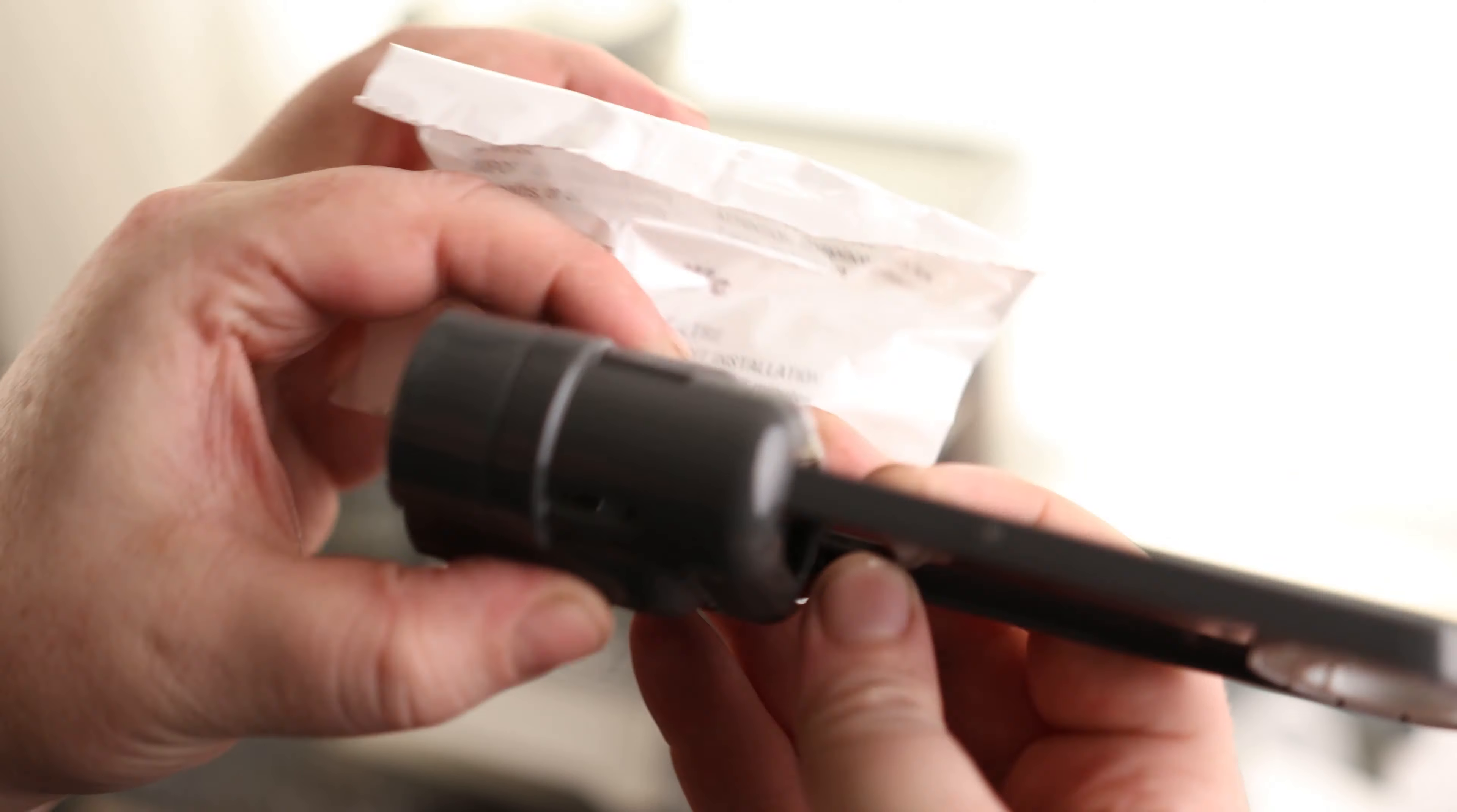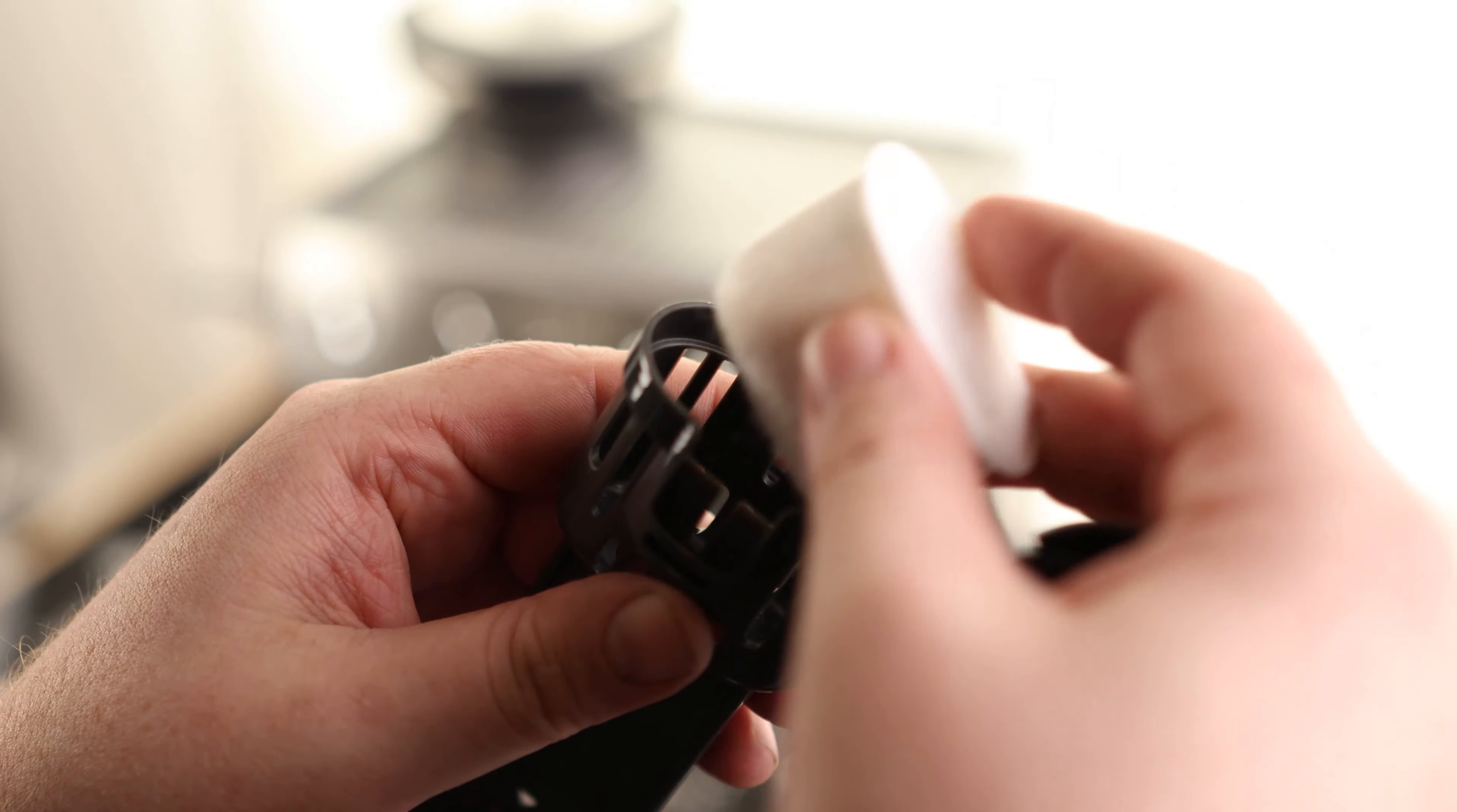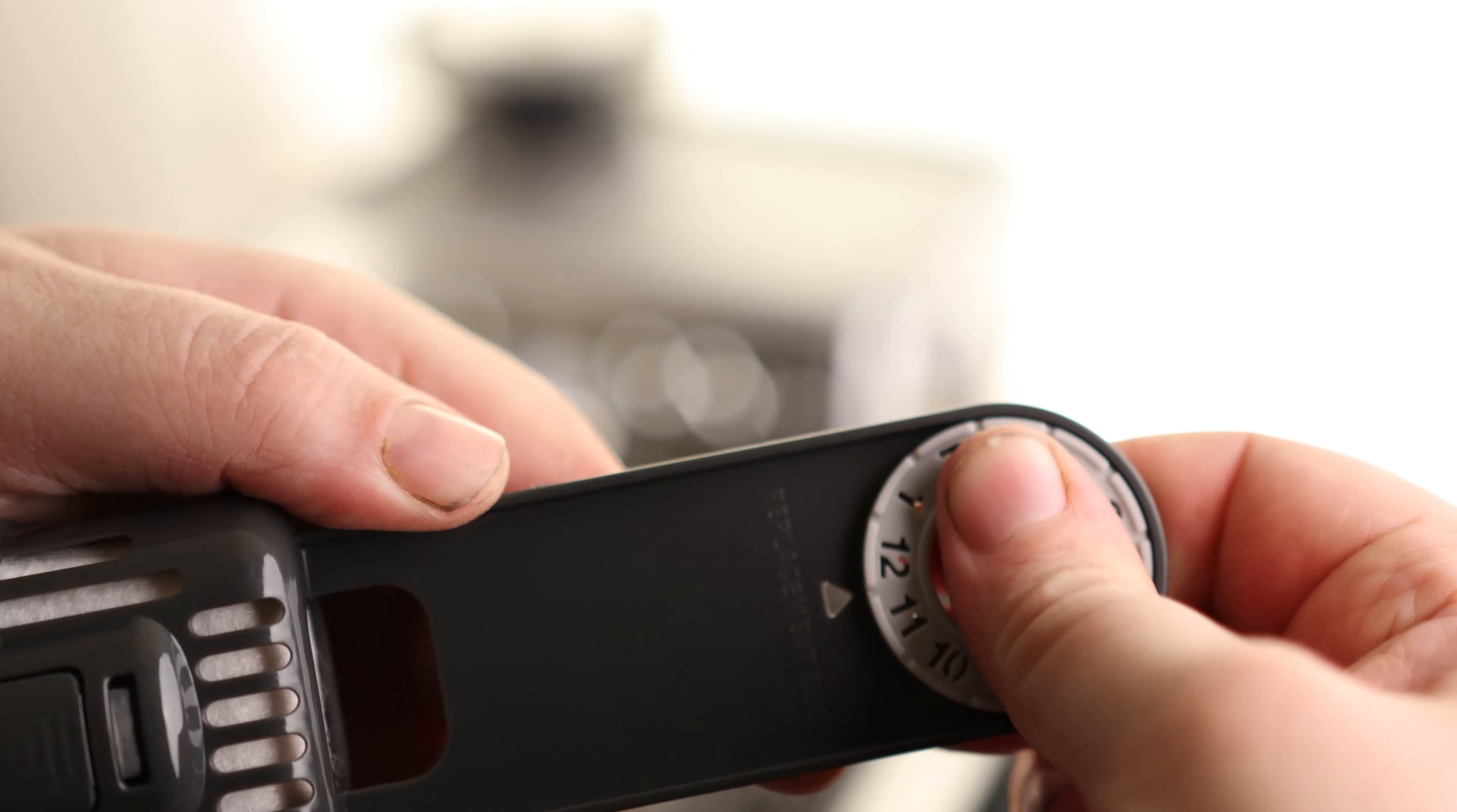So we're just going to grab these tabs. There's one on each side, press in and it pops out. This is just going to pop in here and then we clip that on, put this on 12.